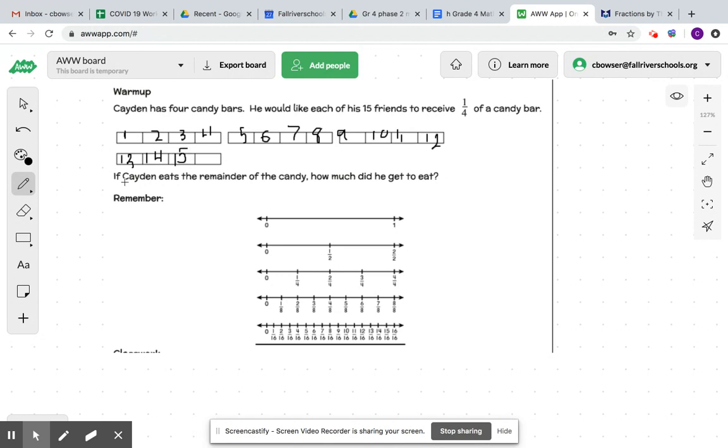And our question says, if Caden eats the remainder of the candy, how much did he get to eat? So we labeled the candy bar and gave each friend one-fourth. Take a minute and look at the image and see how much is left.